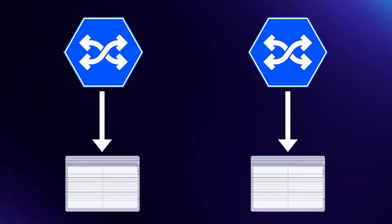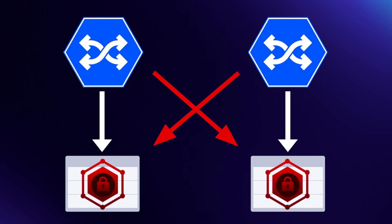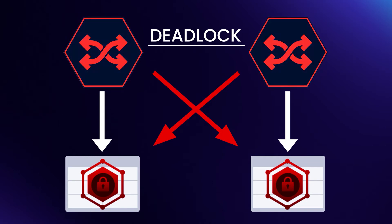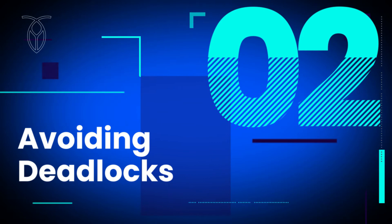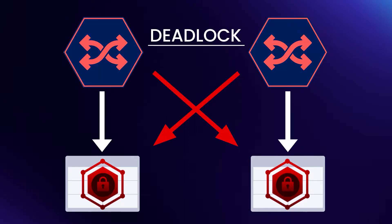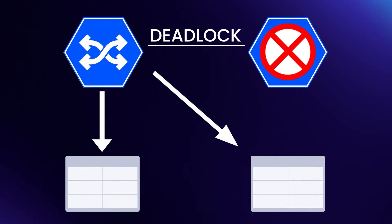In some circumstances, two transactions may end up in contention for the same resources. This can result in a deadlock where neither transaction can proceed until the other is complete. When CockroachDB encounters a deadlock, it will automatically cancel one of the transactions, freeing up the resources in contention and allowing the other transaction to proceed.